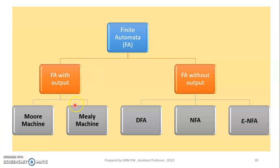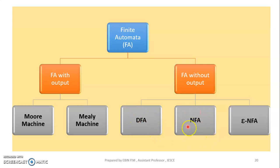Finite automata with output we will divide into Moore machine and Mealy machine. Finite automata without output we will divide into DFA — deterministic finite automata — NFA, that is non-deterministic finite automata, and epsilon NFA, which is non-deterministic finite automata with epsilon moves or epsilon transitions. So this is how we divide the finite automata.